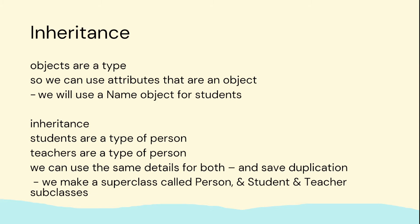In inheritance, when you have classes that have attributes and methods that are similar, you don't want to keep reusing the code. So you have a super class that has methods and attributes, and then sub classes that can use those same attributes and methods. They can inherit the details of the super class — like the attributes and methods — and they can also overwrite them.